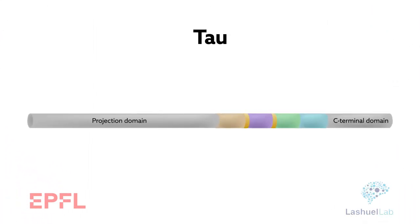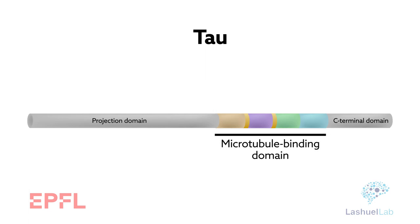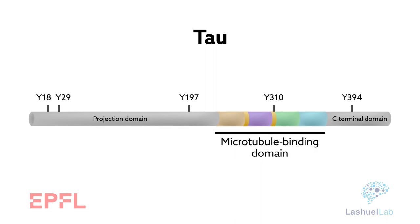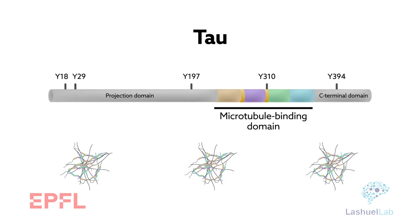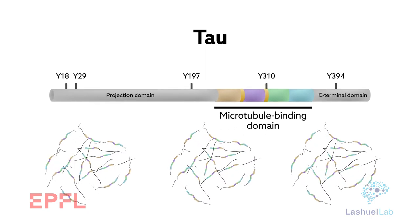For that reason, scientists have dedicated much research to the part of tau responsible for clinging on to microtubules. Findings suggest that this region, known as the microtubule binding domain, could be linked to the subsequent aggregation of tau. At the very core of this region is residue tyrosine-310, which together with four other tyrosines along tau holds the key to potentially preventing tau aggregation.